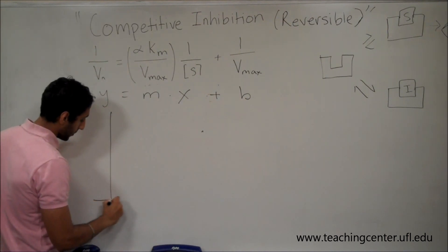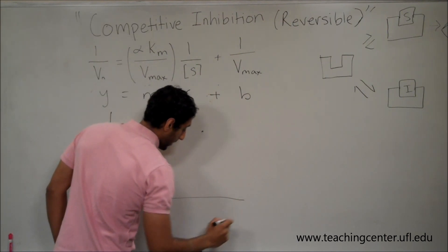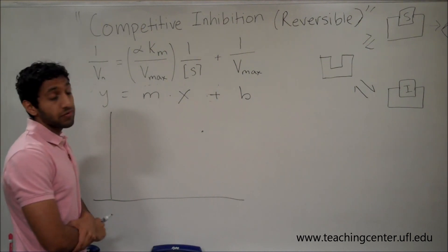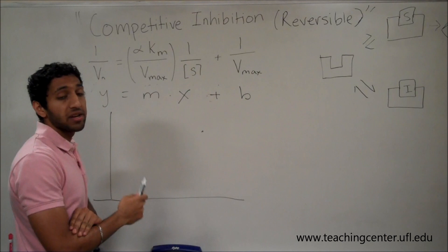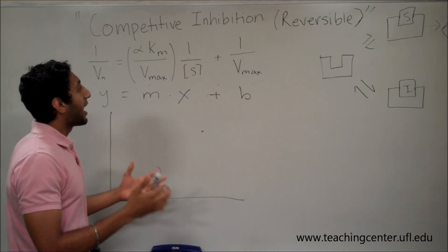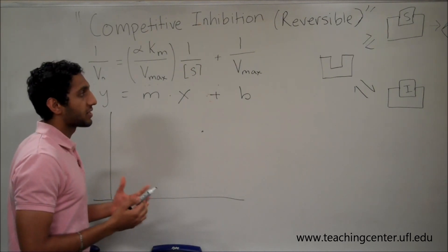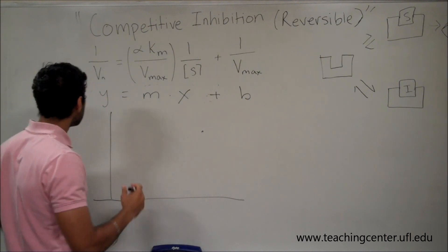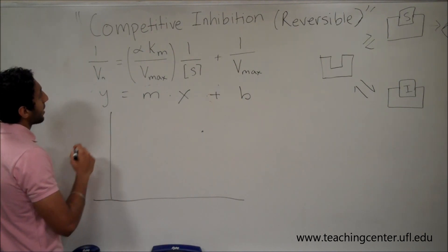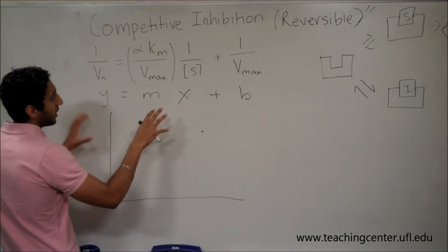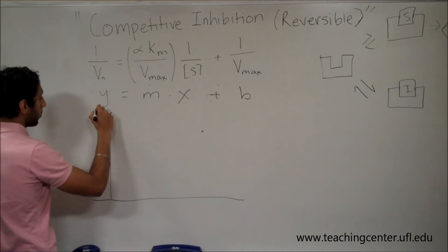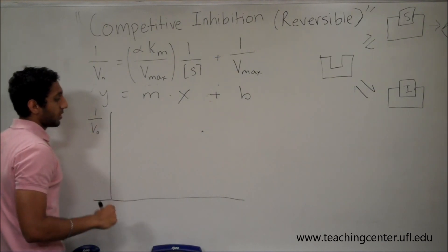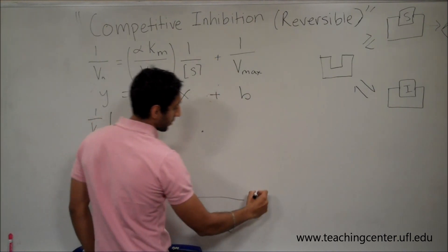Let's go ahead and just graph one real quick. You won't have to actually graph one during the exam, but it will help you in understanding what competitive inhibition is about and how it will actually affect the enzyme's kinetics. So let's label our axes. Our axes should be matching our equation. This would be our y, 1 over v0, and this would be 1 over our substrate.